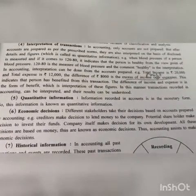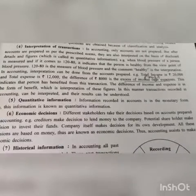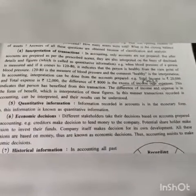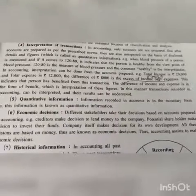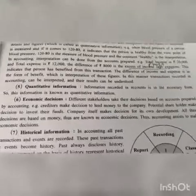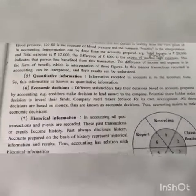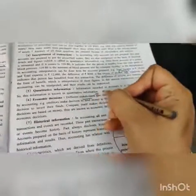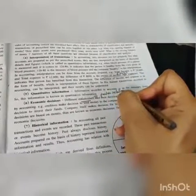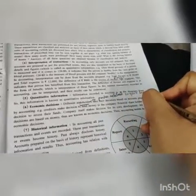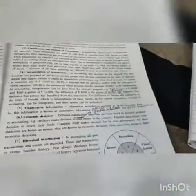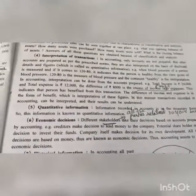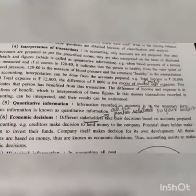Fifth characteristic: quantitative information. Information recorded in accounts is in terms of monetary form — stated in numbers such as 10,000, 20,000, 15,000. This information is known as quantitative information. Sixth characteristic: economic decision by different stakeholders. Stakeholders means all parties related to your business — creditors, customers, government, employees, and others. Creditors are persons to whom you have to pay money, created out of credit purchases. They are interested in your accounts to see if you are profitable and able to pay them.